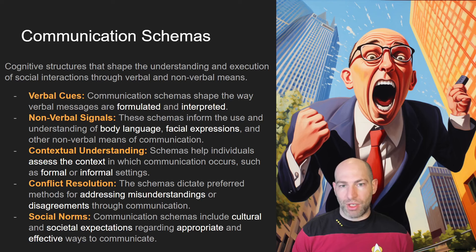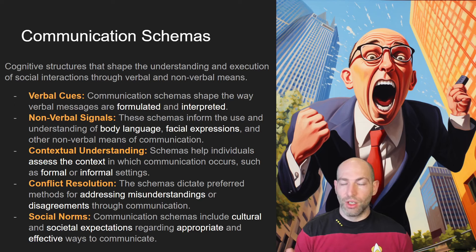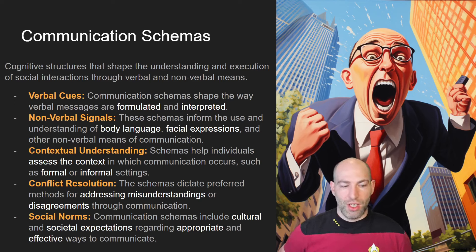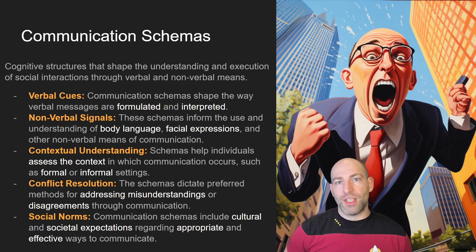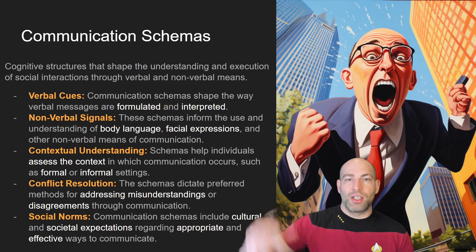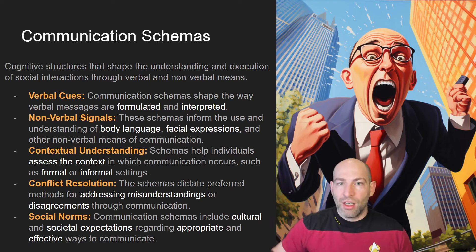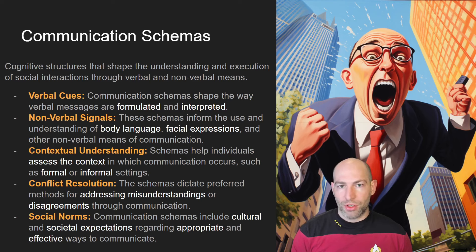Social norms are cultural and societal expectations about what is appropriate and effective in communication. Some cultures consider raising your voice and gesturing just a default effective way of getting a point across — like Italians in traffic — whereas in other contexts that same behavior might be perceived as violent. Communication schemas have to do with tone of voice, pitch, volume, hand gestures, and different cultures, different families, and different people interpret communication schemas vastly differently.